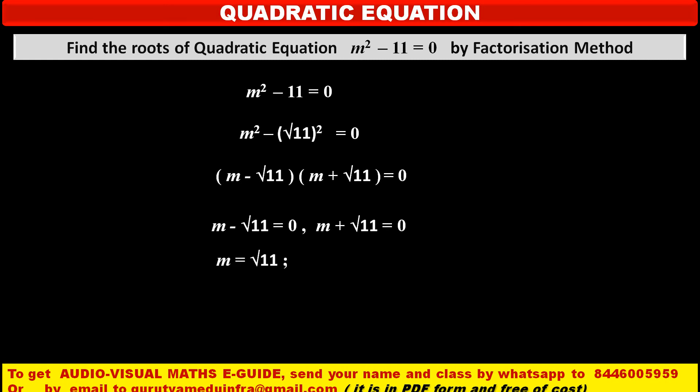So either m = √11, by shifting √11 to the right hand side and changing its sign, or similarly in the second part m = -√11.